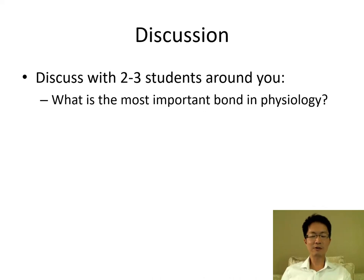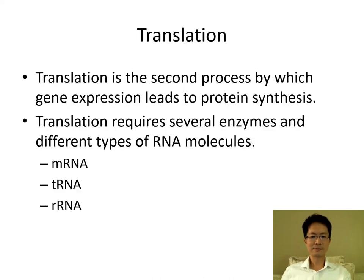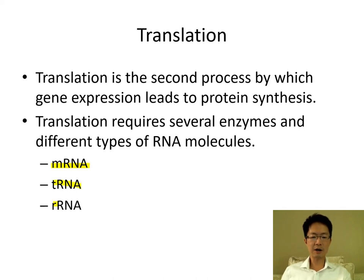The most important bond in physiology should be the hydrogen bond. Translation is the second process by which gene expression leads to protein synthesis. Translation requires several enzymes that we will not talk about here, but we will talk about the three types of RNA: mRNA, tRNA, and rRNA.